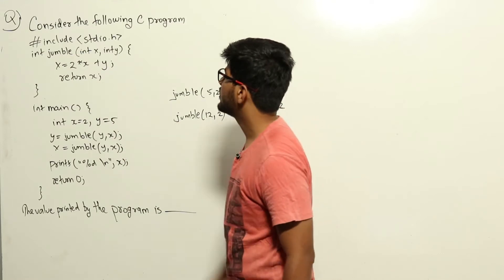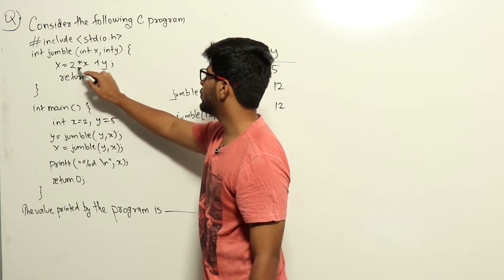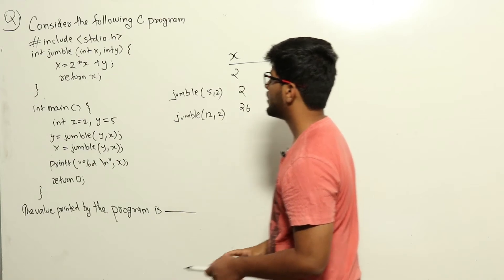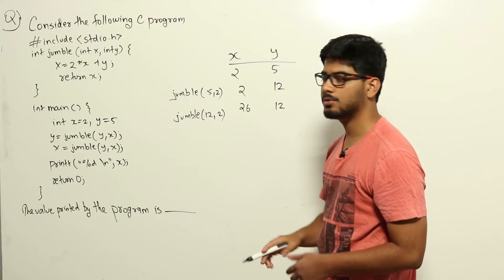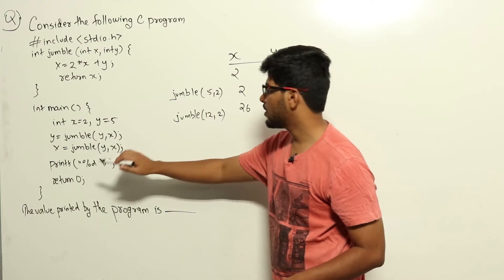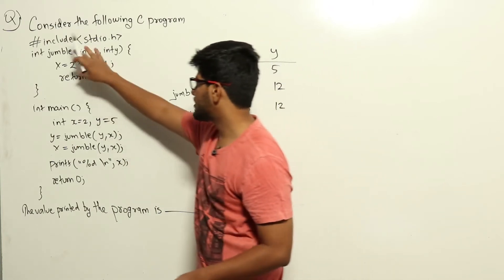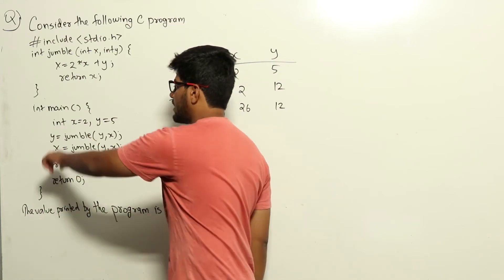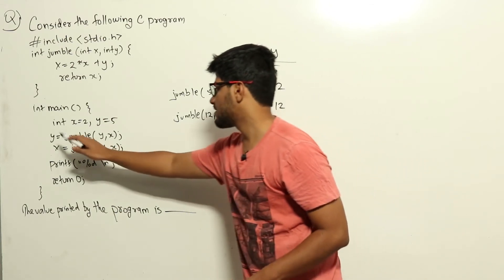In the function jumble, passing x and y, it returns 2 into x plus y — x gets assigned as 2 into x plus y and we return that value. So calling jumble(5, 2) returns 5 into 2 plus 2, that is 10 plus 2 equals 12. These calls are call-by-value, so the x and y in main are not affected inside the function. Whatever we return gets assigned back, so jumble(5, 2) returns 12 and that is assigned to y, meaning y now becomes 12 and x remains 2.